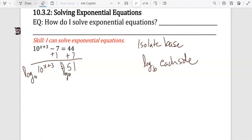Now, log base 10 is the same as just log. That will cancel on that side. We'll rewrite it. We have x plus 3 equals log base 10 of 51.